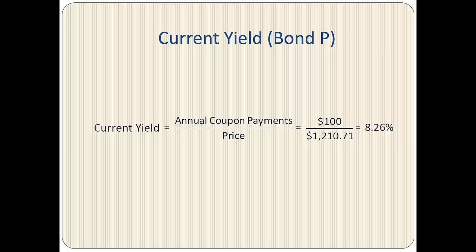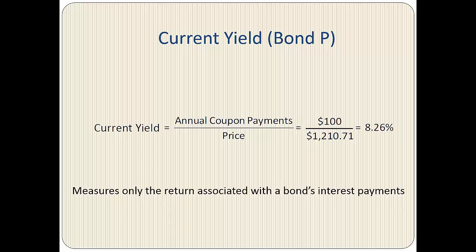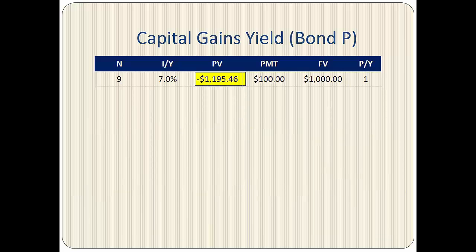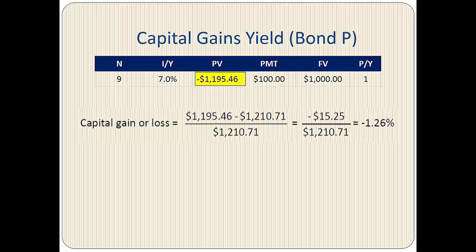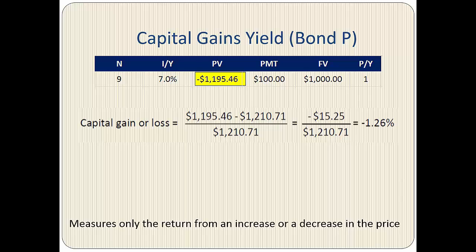Now we compute the present value of the bond. The current yield equals the annual interest payment divided by the current price, so we divide the coupon payment of $100 by the calculated price and find the current yield to be 8.26%. The current yield measures only the return associated with the bond's interest payments. To find the capital gain or loss over the next year, assuming yield to maturity remains unchanged, we calculate the price with 9 years remaining by setting N equals 9, and the present value comes out to $1,195.46, giving a capital loss of 1.26%.